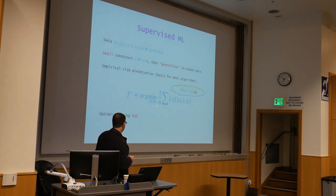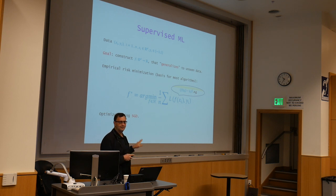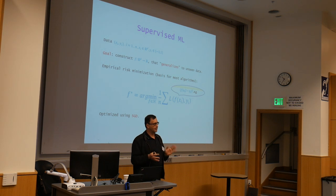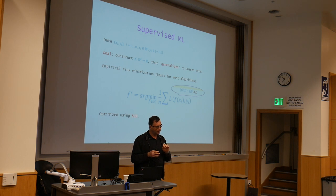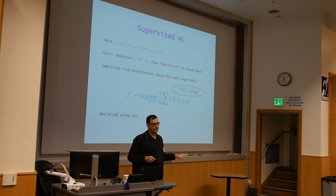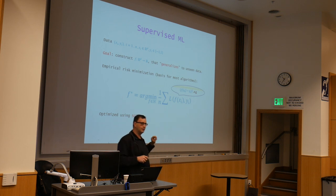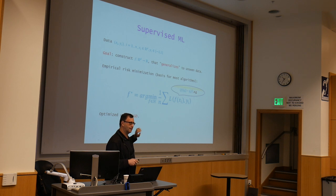How do you actually do it? You optimize this using stochastic gradient descent, which is ubiquitous in modern machine learning. Really nothing else is used, at least for big datasets. When I say stochastic gradient descent, there are many variants of it, but I'll talk about stochastic gradient descent specifically.